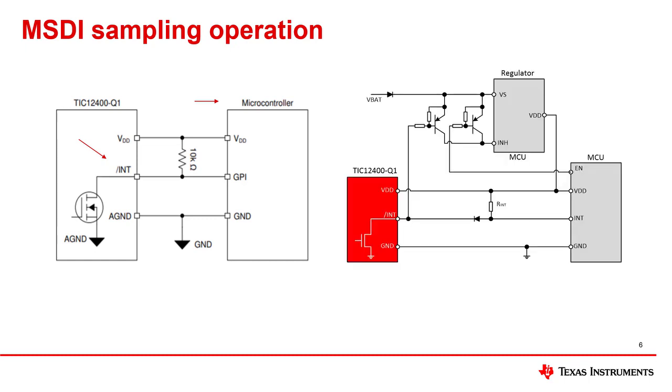The interrupt pin can be used for wake-up purposes to activate a voltage regulator via its inhibit or enable input based upon the MSDI device detecting a state change on one of the switch inputs. This implementation is specially used for waking up a microcontroller in sleep mode to allow significant system level power savings.